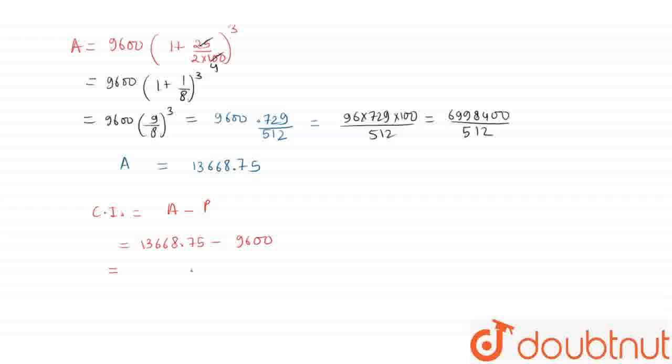Subtracting, we get 0.75, then 8, 6, and 0. 13 minus 9 becomes 4, giving us 4068.75.